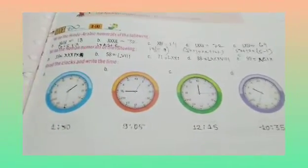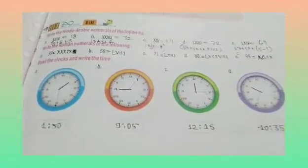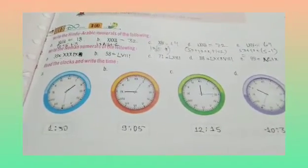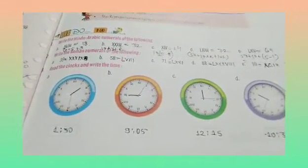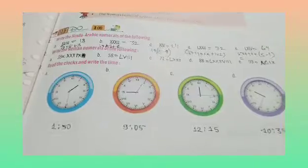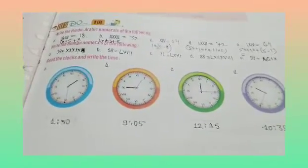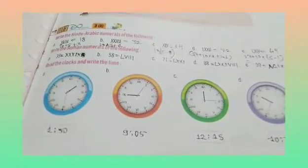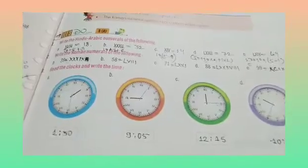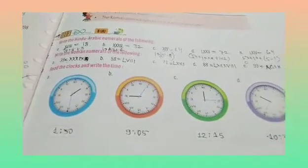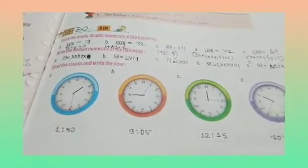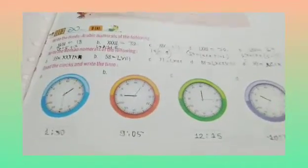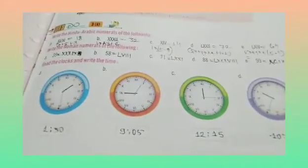Okay children, copy these down in your classwork copy in very neat and clean handwriting. Write Question number 3: Read the clocks and write the time, then draw the clocks in your classwork copy and write the time.